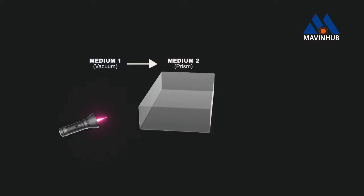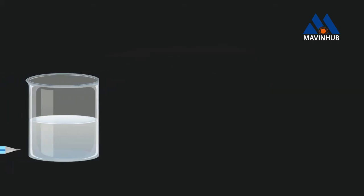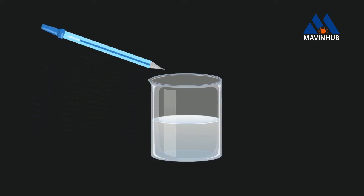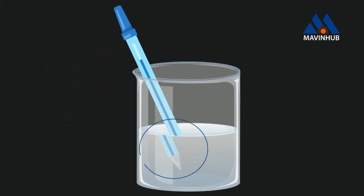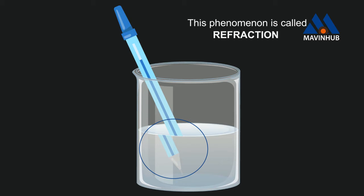When light passes through from one medium to another, it actually changes direction instead of passing through straight. As a result, the image can either be shifted or distorted. For example, when you look at a pencil that is half submerged in a glass of water, you notice it appears distorted — it does not appear straight. This phenomenon is called refraction.